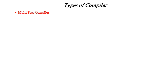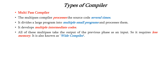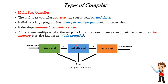The last type of compiler is the multi-pass compiler. The multi-pass compiler processes the source code multiple times. It divides the large program into multiple small programs and then processes them. It also develops multiple intermediate codes, and all of these multiple passes take the output of the previous phase as input. Therefore, it requires less memory and it is also known as a wide compiler. The source code is given to the front-end, which transforms it into an intermediate representation, then passes it to the middle-end, which gives an intermediate representation to the back-end, and finally machine code is generated. Multiple intermediate representations can be generated in the multi-pass compiler, and if any errors are there, they are reported to the user during compilation.